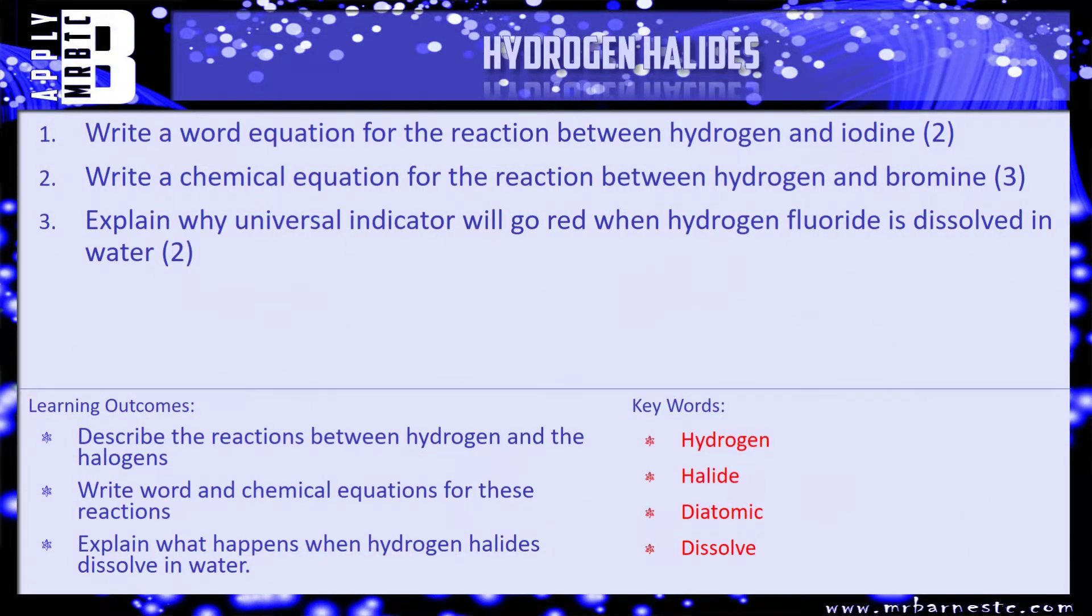That's everything from this video then. I've got a few questions for you. So number one, I'd like you to write a word equation for the reaction between hydrogen and iodine, very similar to what we've just been talking about. Write a chemical equation for the reaction between hydrogen and bromine, and then explain why universal indicator will go red when hydrogen fluoride is dissolved in water. So think back to what we've talked through in this video, have a go at the questions, and we'll see how you've done in a minute.